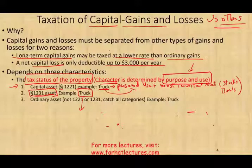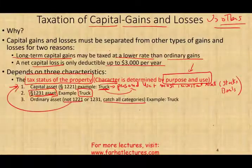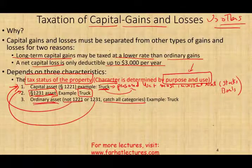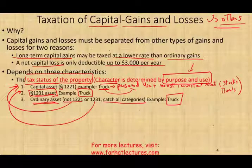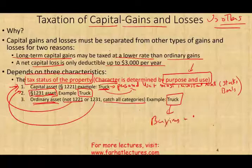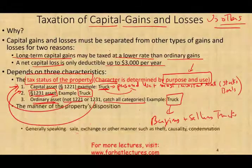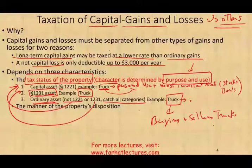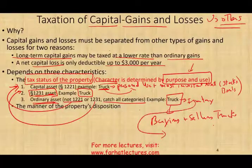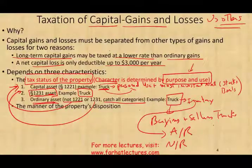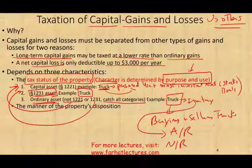An ordinary asset is a catch-all category. If the asset is not a capital asset and not a Section 1231 asset, then it's an ordinary asset. For example, if you are in the business of buying and selling trucks — like a dealership — the trucks are considered inventory, and inventory is an ordinary asset. When you sell this inventory, you may have accounts receivable or notes receivable, which are also ordinary assets.